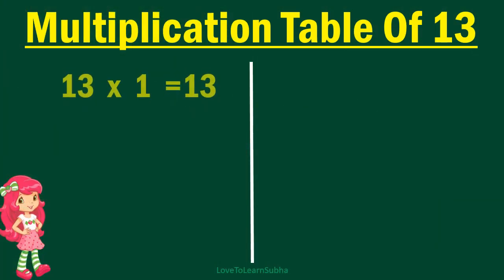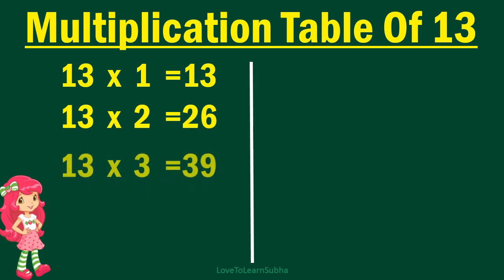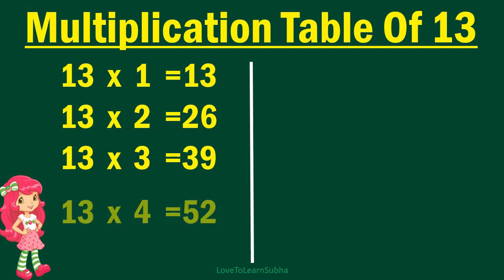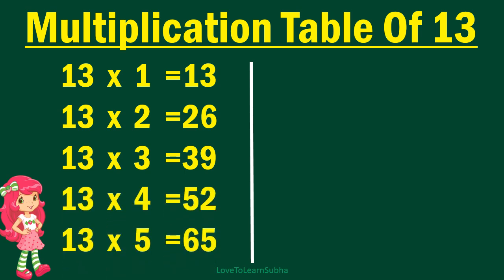13 ones are 13, 13 twos are 26, 13 threes are 39, 13 fours are 52, 13 fives are 65,